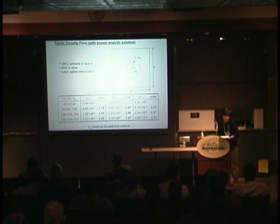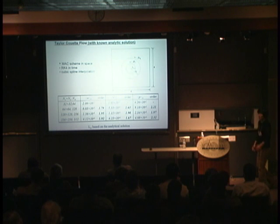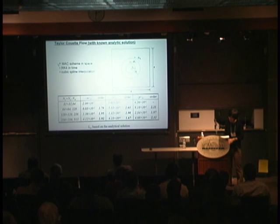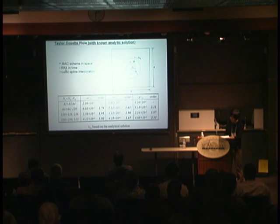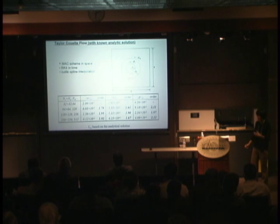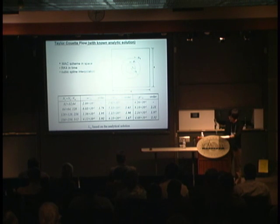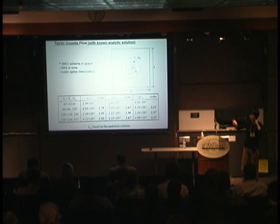Once you put everything together, the spatial discretization uses a compact scheme in terms of velocity and pressure. In time we use a fourth-order Runge-Kutta scheme — this allows an explicit scheme to ensure numerical stability. For the Lagrangian points parameterizing the interface, we use a cubic spline.